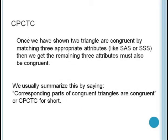Once we show two triangles are congruent by matching three parts, then we know that the other three parts must be identical. This is usually summarized by saying corresponding parts of congruent triangles are congruent, or often by its acronym CPCTC.